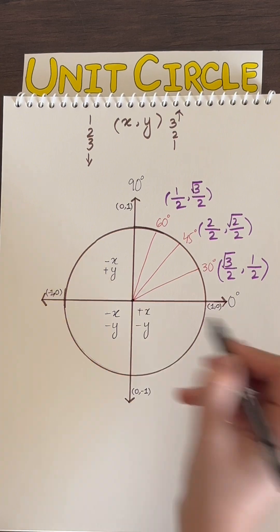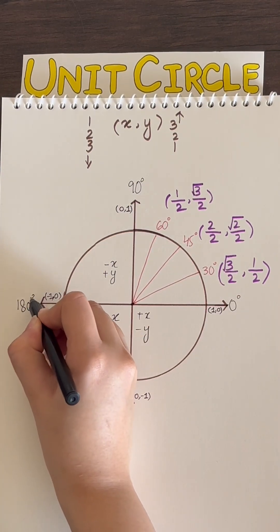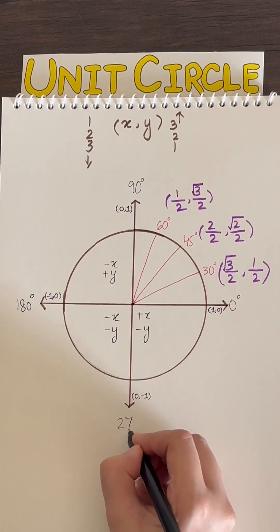Now let's add 90 degrees to each corner. So 90 plus 90 is 180, and 180 plus 90 is 270.